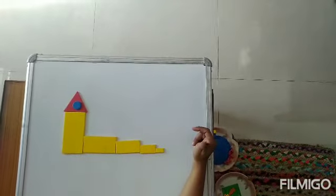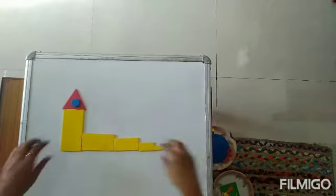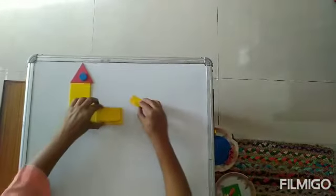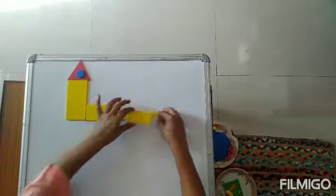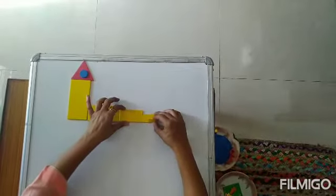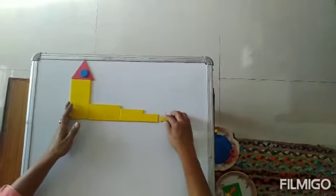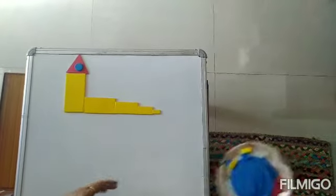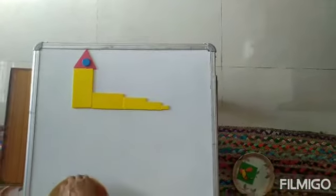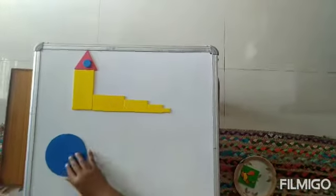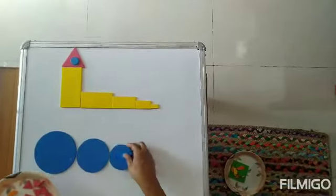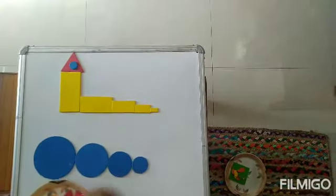By using these shapes, we can make few more. Let me keep this house and stairs on this side. Now, I will show you a caterpillar out of the circles. Let me give you the biggest circle. Then this. And this is the smallest one.